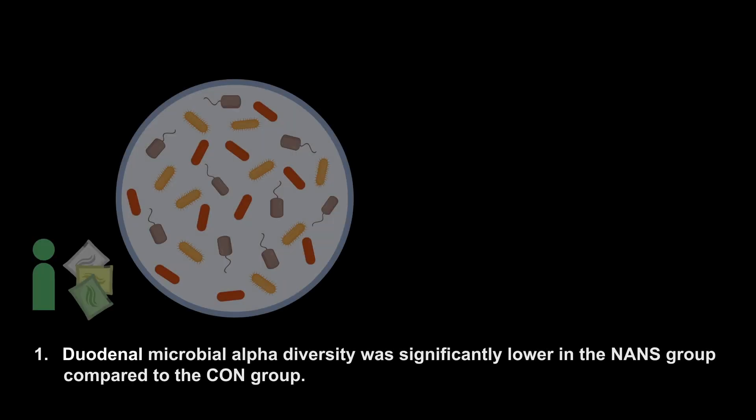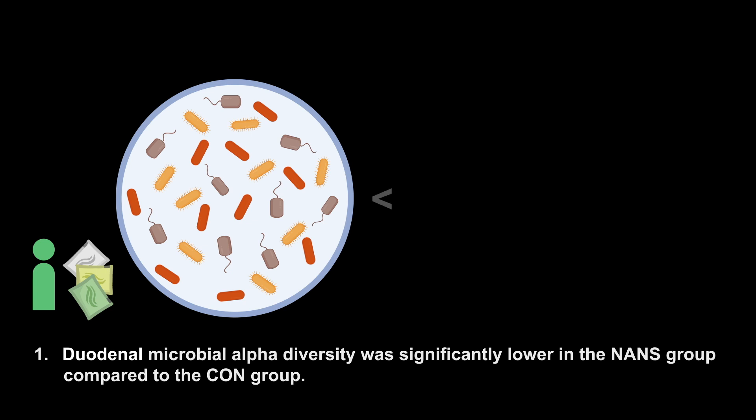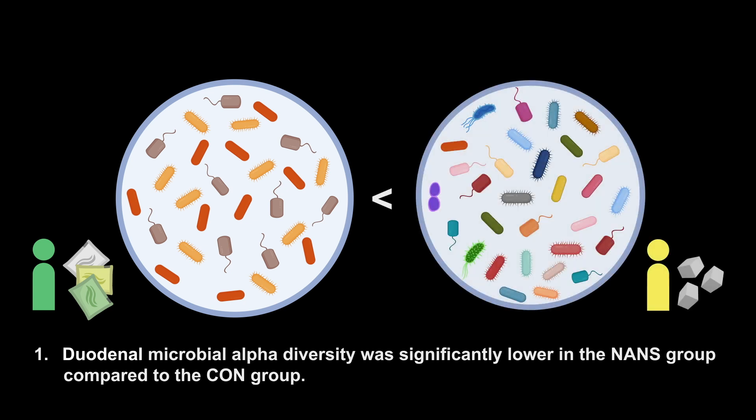These were the main findings from the paper. Duodenal microbial alpha diversity was significantly lower in the NANCE group compared to the control group.